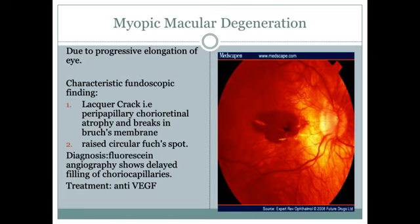Lacquer cracks are basically peripapillary chorioretinal atrophy and breaks in Bruch's membrane. You will also see Fuchs' spot. Key difference: in age-related macular degeneration you see drusen, while in myopic macular degeneration you see Fuchs' spot.